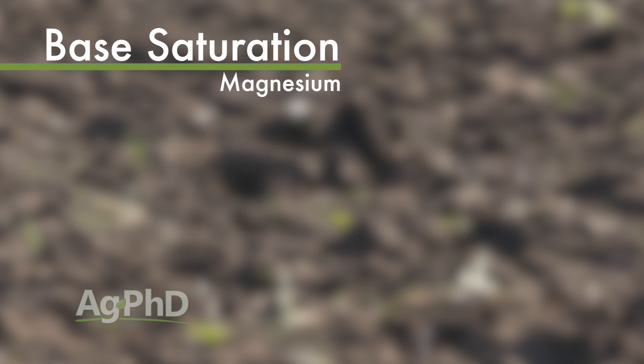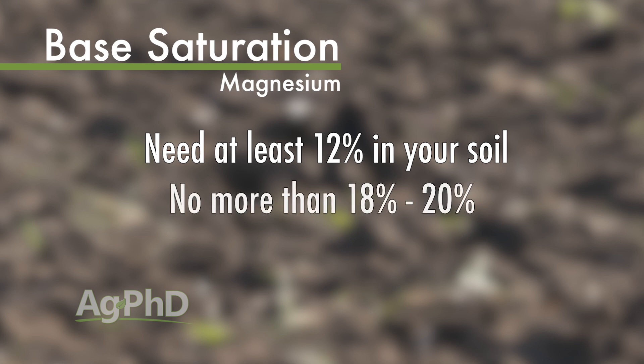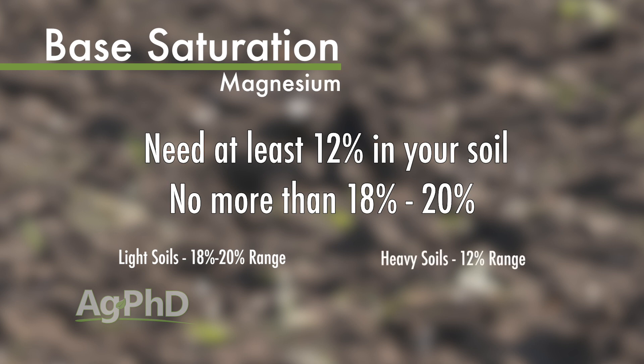With magnesium, depending on how heavy or light your soil is — and this one is a little complicated — we want to see at least 12% magnesium, probably not more than 18 or 20%. If we're in a really light soil we want to be towards the higher end of that range, and if we're in a heavy soil we want to be towards the lower end.